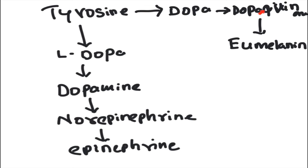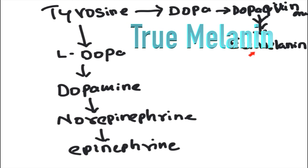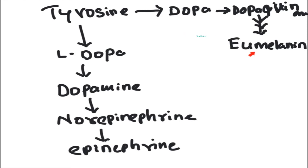Dopaquinone undergoes multiple reactions and ultimately melanocytes synthesize eumelanins and pheomelanins. Eumelanins are the true melanins and give pigmentation to the skin via melanosomes from melanocytes — this is a special product coming from tyrosine.